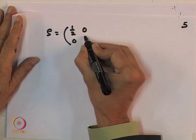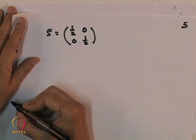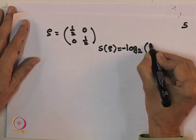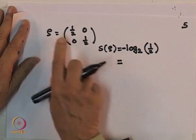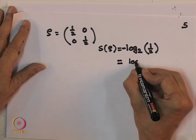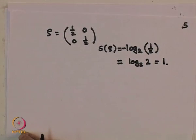But consider a mixed state, for example the maximally mixed state which we have discussed several times. Supposing ρ is equal to the matrix with 1/2, 0, 0, 1/2. S of ρ, you can see immediately, is minus 1/2 log 1/2 minus 1/2 log 1/2, so that adds up to 1. This is simply log 2.